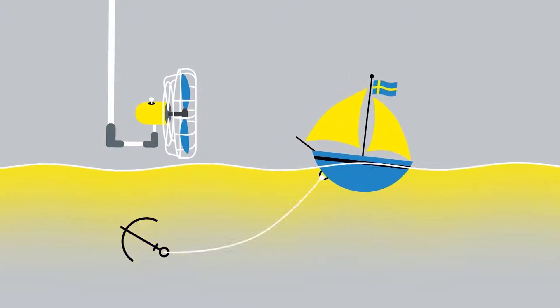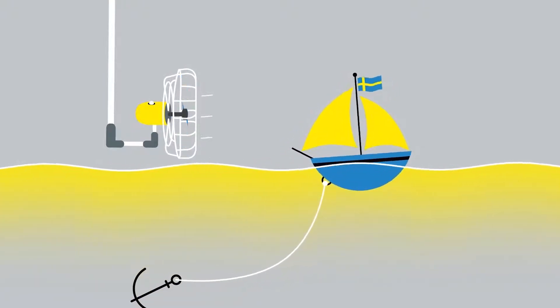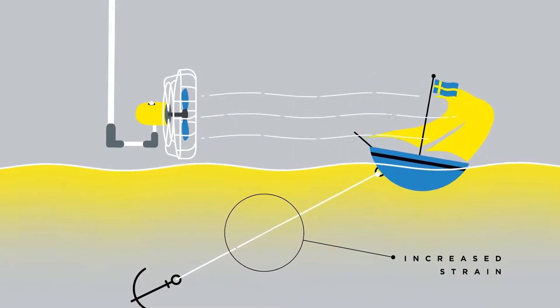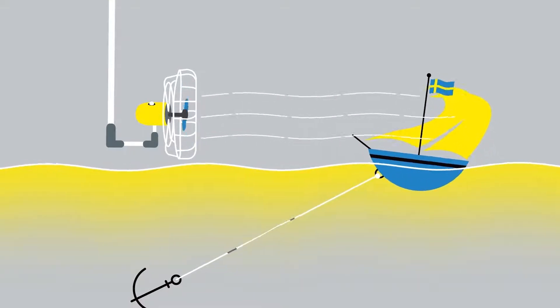Now imagine our boat is attached with a line to a very heavy anchor. The more the fan pushes the boat the more strain is translated to the line. If the strain is high enough the line can stretch and become damaged or even break.